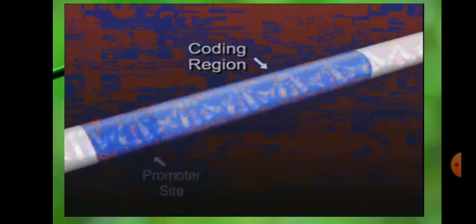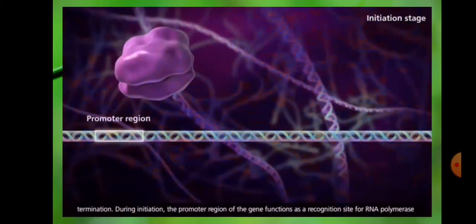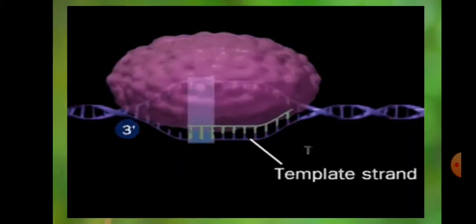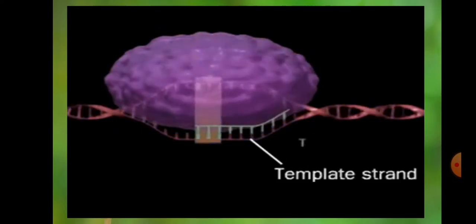In this slide, you can see the DNA molecule. The white part indicates the coding region which will be transcribed. RNA polymerase selects the promoter site and termination site. You can see the RNA polymerase selecting the promoter region and termination region, and then going ahead by breaking hydrogen bonds of the DNA molecule.